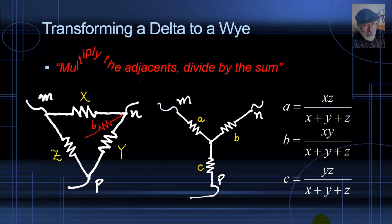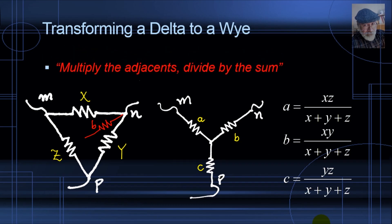To summarize: multiply the adjacents, divide by the sum. You can use the same formulas for inductors connected in a triangle that you want to convert into a Y star. It works with inductances. But if you are converting a triangle of capacitors into a Y of capacitors, use the same formulas with the inverses of the capacitances of X, Y, and Z to get the inverse of capacitances A, B, and C.